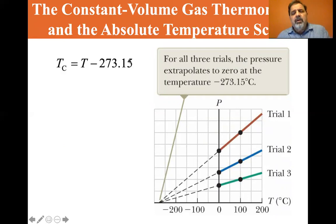So we know that the Celsius temperature is equal to the absolute temperature minus 273.15.